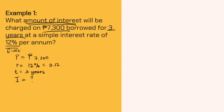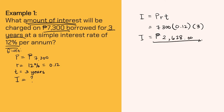I is unknown. To solve this problem, we use I is equal to P times R times T. Substituting all the given into the formula, we have 7,300 times 0.12 times 3. Using your calculator, you will get the interest as 2,628 pesos. The conclusion is: the principal will earn an interest of 2,628 pesos.